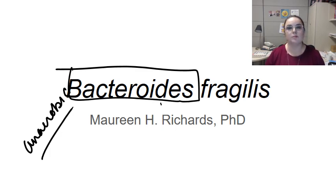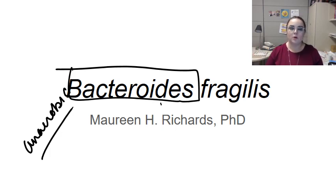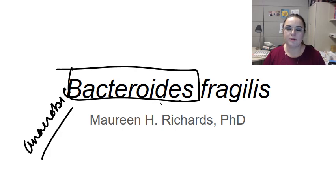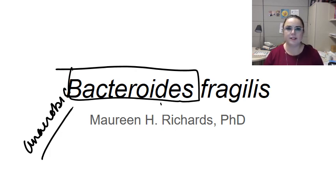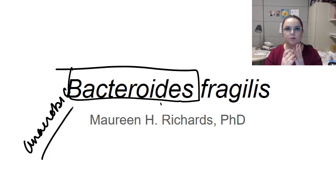Where there becomes a problem is when Bacteroides leaves the GI tract. Because while we love to have it in our gastrointestinal tract for protection from other pathogens and to help with digestion, it's really not great outside of there. And B. fragilis is the most important member of this genus when we're talking about disease.